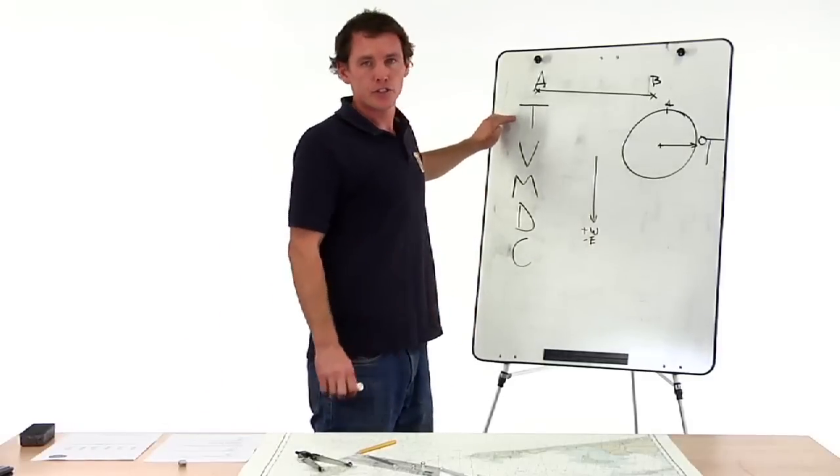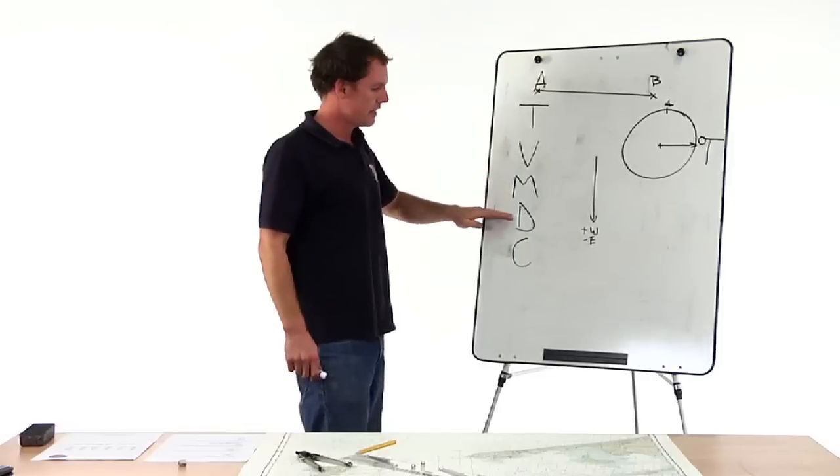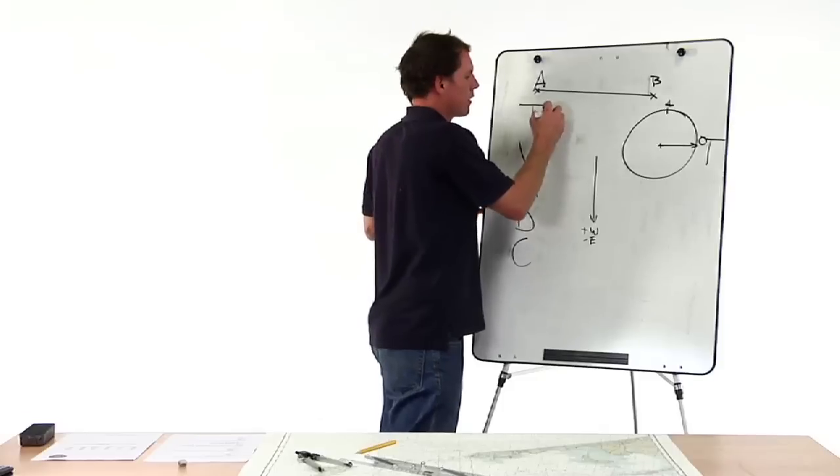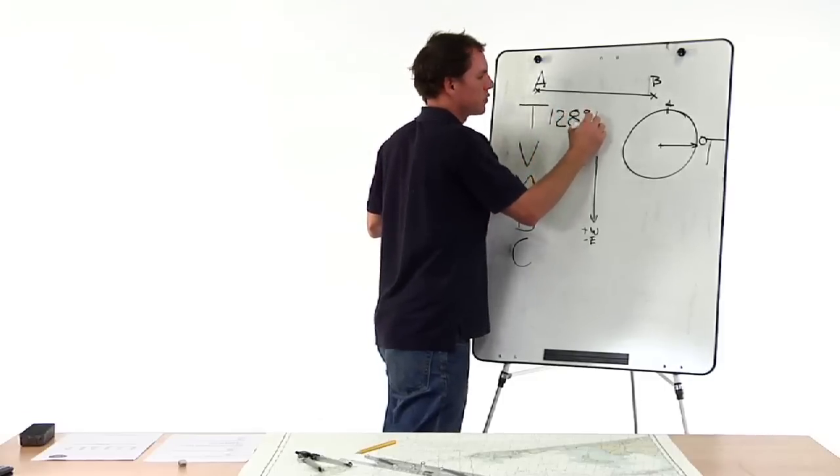Every time we get degrees true, it goes up here: true, variation, magnetic, deviation, compass. 128 degrees true.